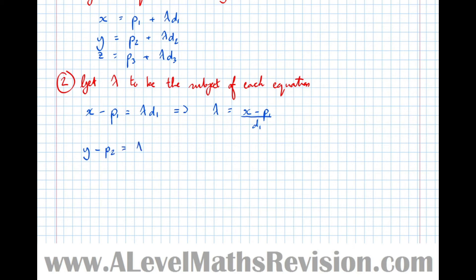And then for z, we get z minus p3 equals lambda d3, which implies that lambda equals z minus p3 over d3.